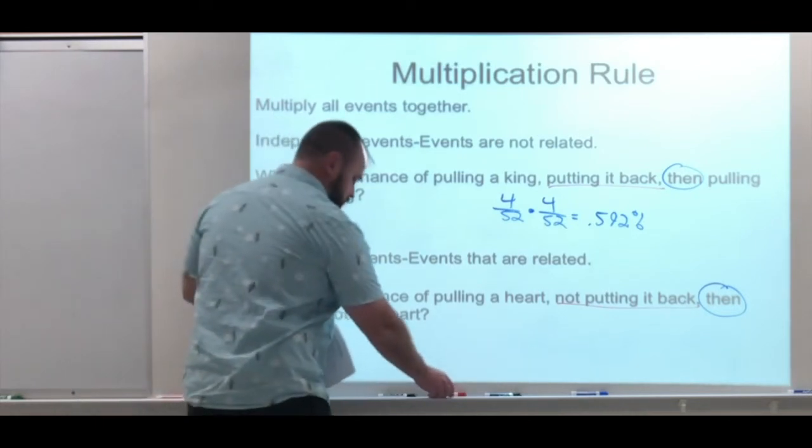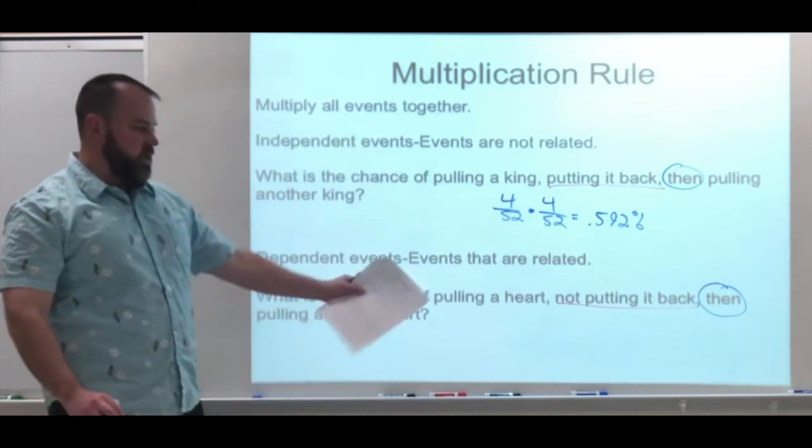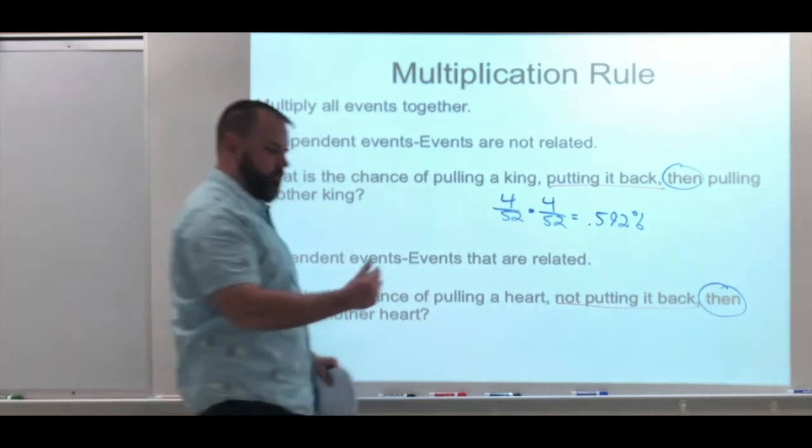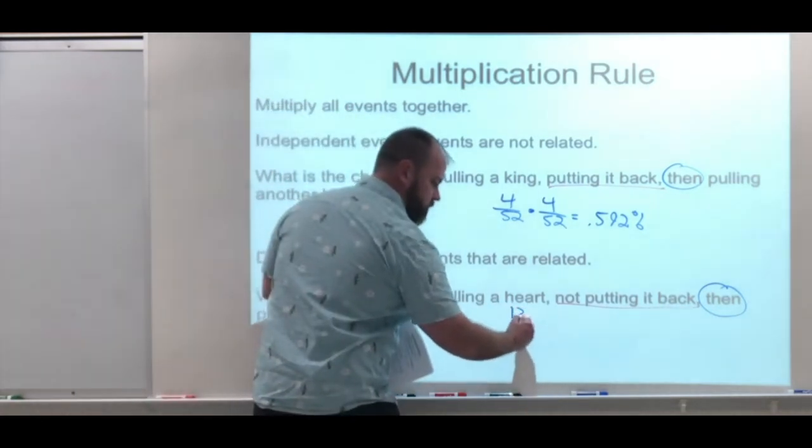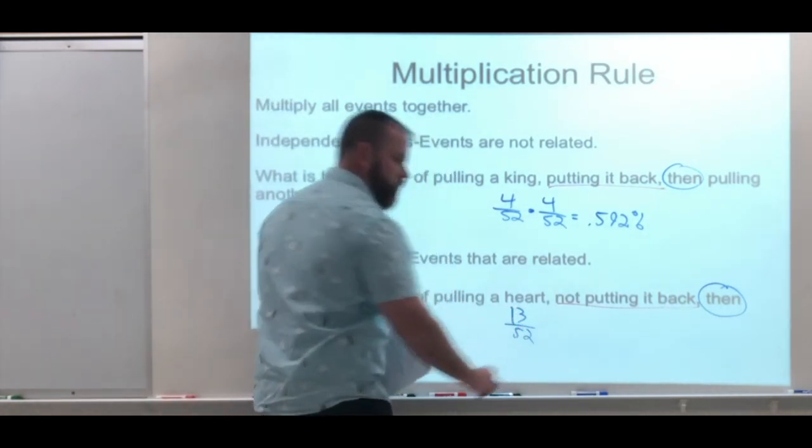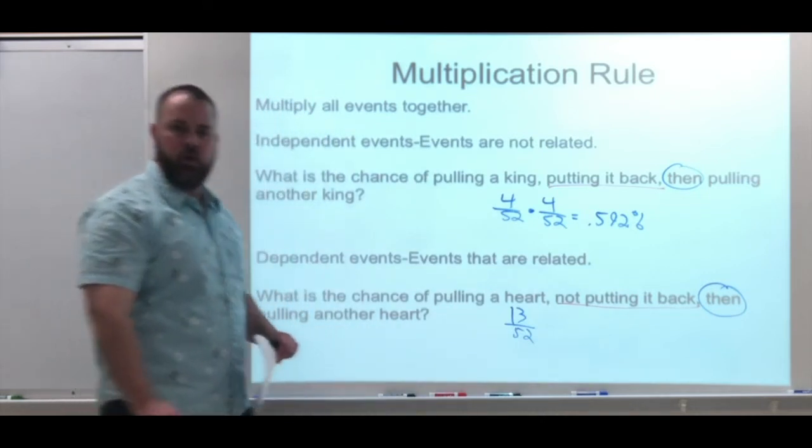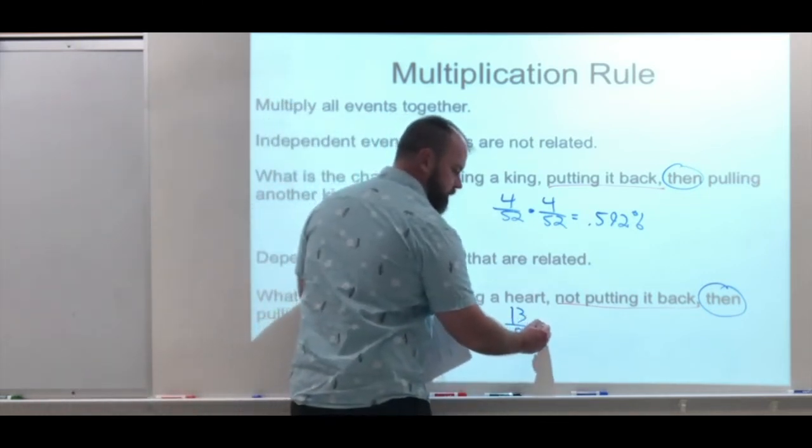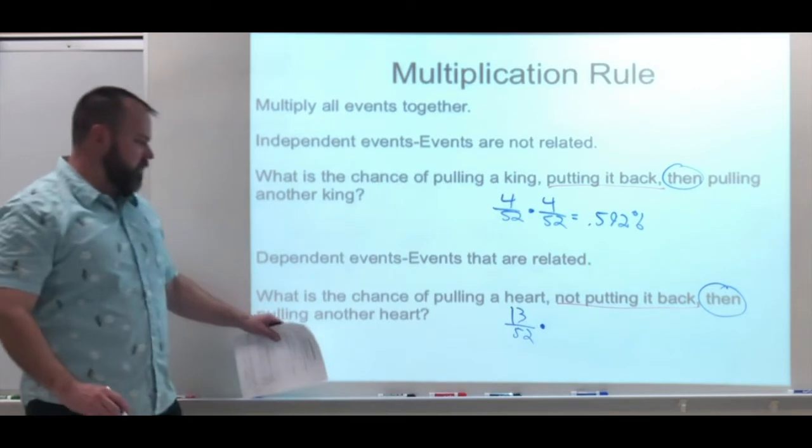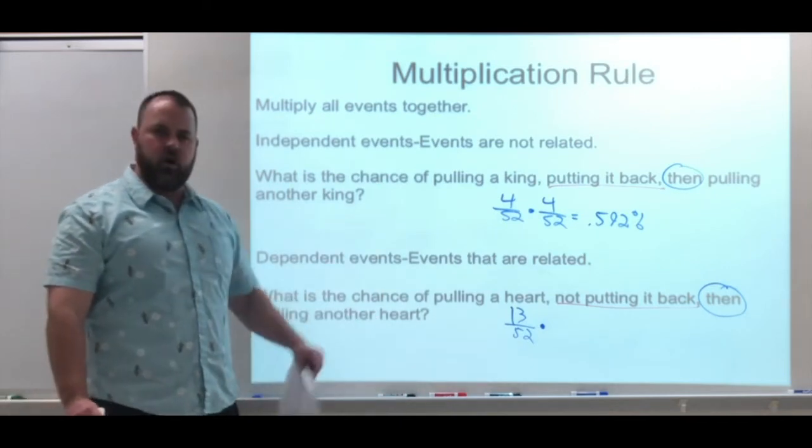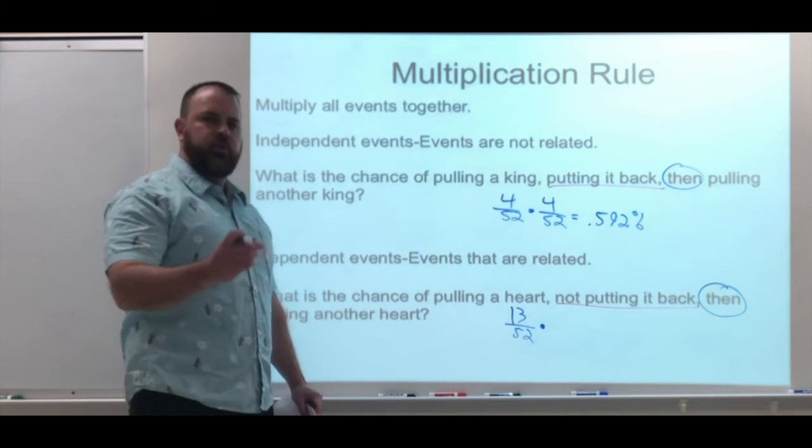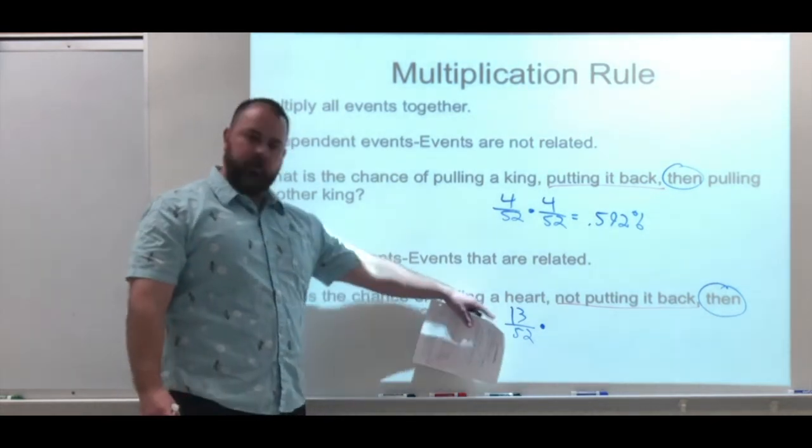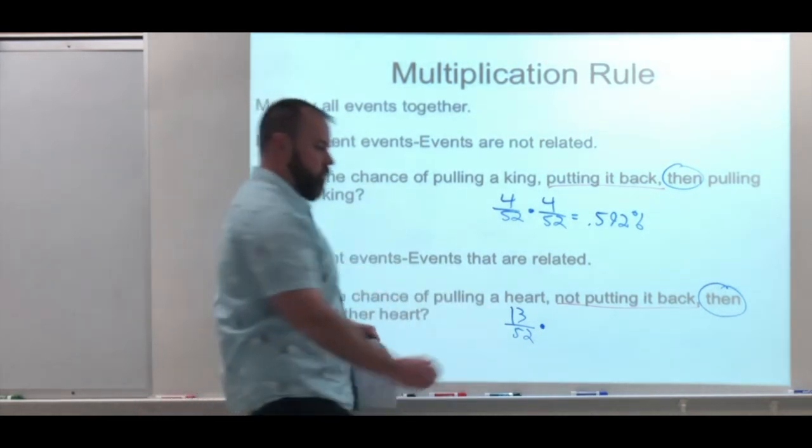So let's look and do this problem and see what happens. So what's the chance of pulling a heart? There's our first event. We know that there are 13 hearts and there's 52 cards. The keyword then means we're multiplying. And now the second part, since we didn't put that card back, it says pulling another heart. Since we took one heart out, there's no longer 13. We didn't put it back, so there's only 12.